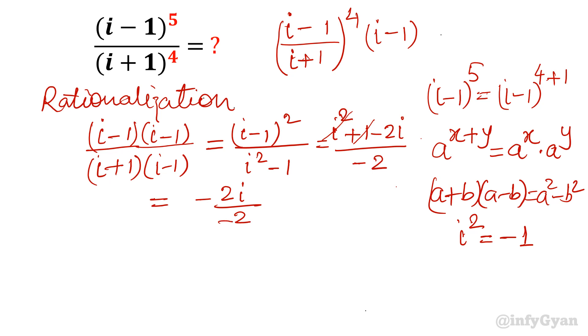The -2 cancels out, and iota is left. Now let us put this value back. Our rationalized value would be equal to iota^4. This bracket we resolved using rationalization, so that value is iota. iota^4 times (iota minus 1).